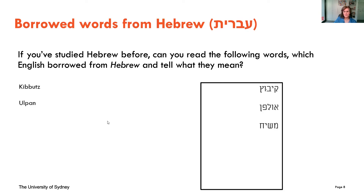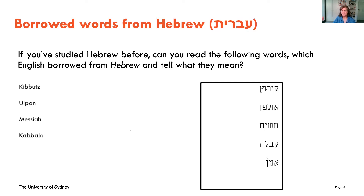I'm sure you're familiar with the English word for 'mashiach' — it's Messiah. Next is 'kabbalah,' which you'd probably pronounce kabbalah or kabbalah in English. It's the name of Jewish mysticism, which is one of my specific loves. Another one is 'amen' — in Hebrew it's pronounced 'amen.' And the last one is 'hallelujah,' which actually means 'praise God.'